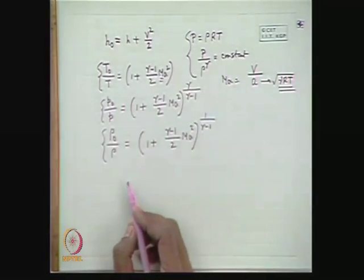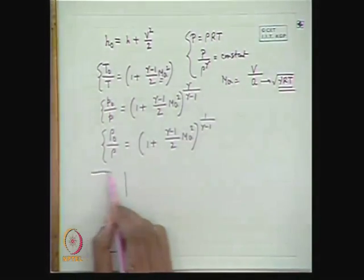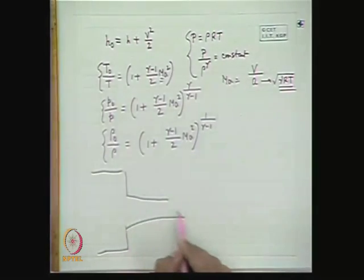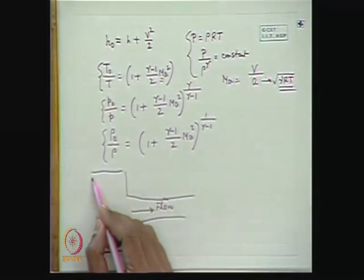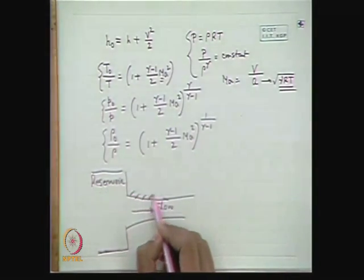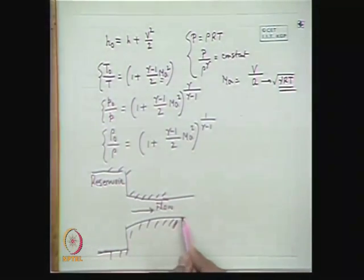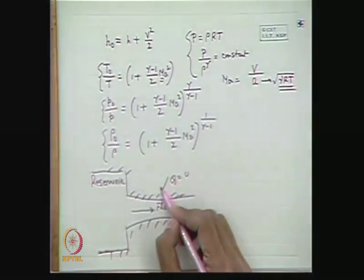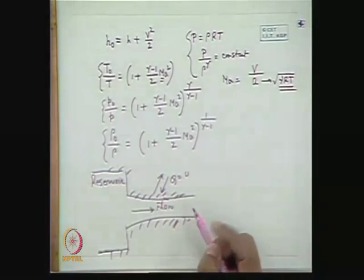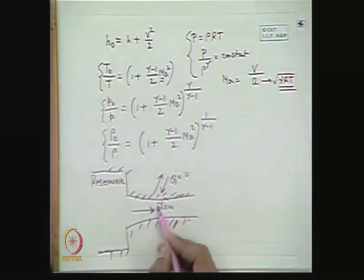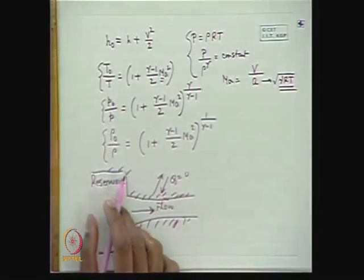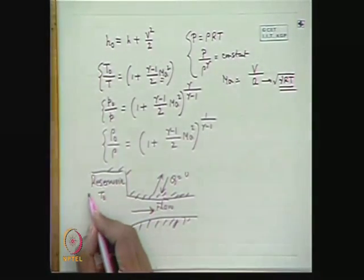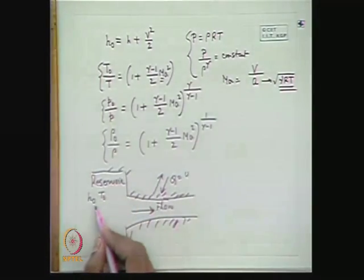Let us realize this situation physically. If we have a large reservoir from which flow commences through a variable area duct, and both the duct and reservoir are insulated (Q = 0, no heat interaction), and the flow is inviscid (free from frictional effects), then this flow is isentropic. For this isentropic flow, the conditions at the reservoir where the fluid is at rest are the stagnation conditions.